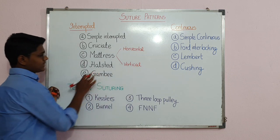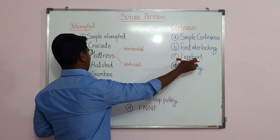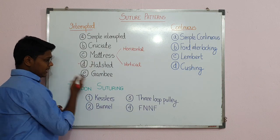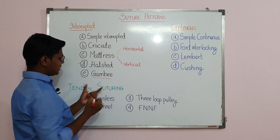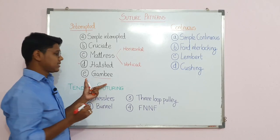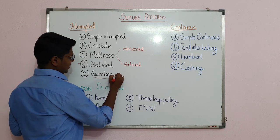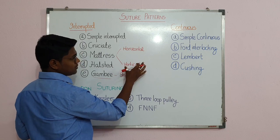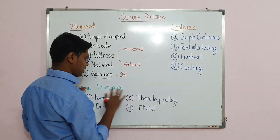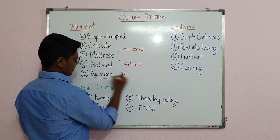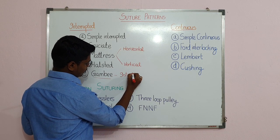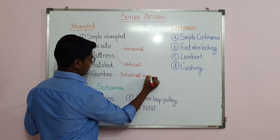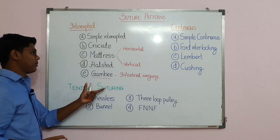Halstead is nothing but the interrupted Lambert suture — it is known as Halstead. This can come as an objective question. Next is the Gambi pattern — this also comes as an objective question, even in entrance examinations. The Gambi suture technique is used for intestinal surgery. Remember: the Gambi pattern is used for intestinal surgery.